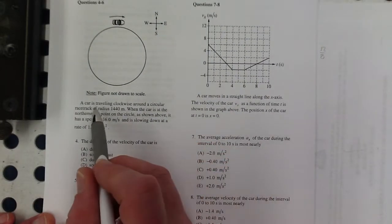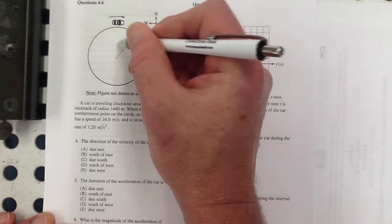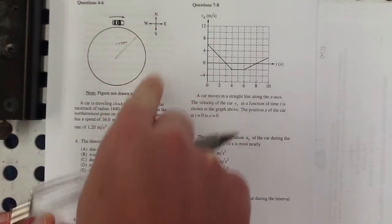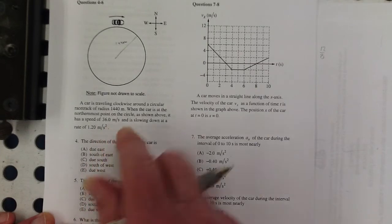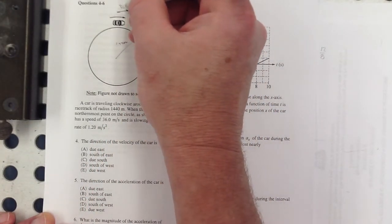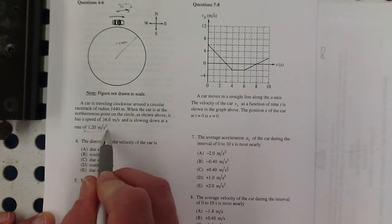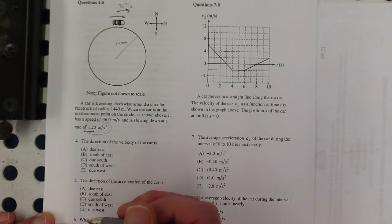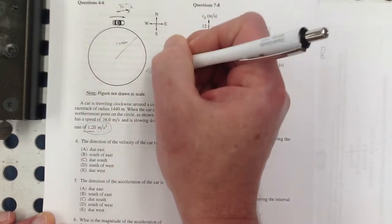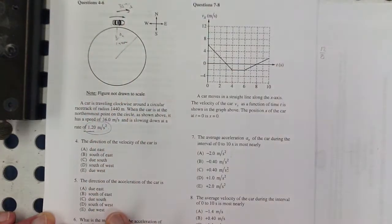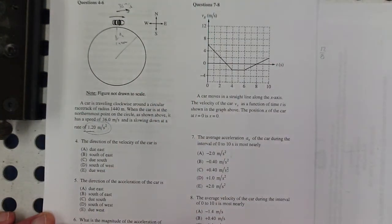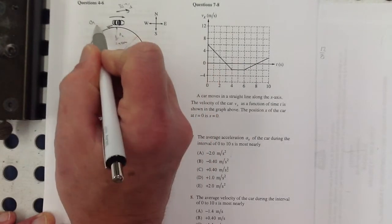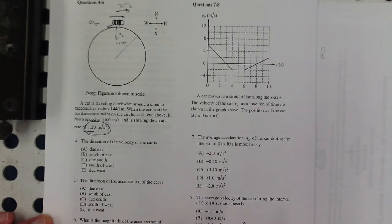Number four, cars traveling clockwise around a circular track of radius 1,440 meters. When the car is at the northernmost point on the circle, as shown above, it has a speed of 36 meters per second. It's going clockwise, so that's this way. So that's like its tangential acceleration, right? So that's like looking at the speedometer. Now, just to move in a circle at a constant speed, you have to have a centripetal acceleration of v squared over r. We could actually figure out what the magnitude of it is. And then also, this is the tangential acceleration, which is slowing it down, so that's pointing in this direction. So I think I'm going to need to know that stuff.